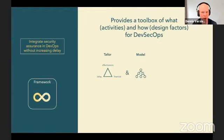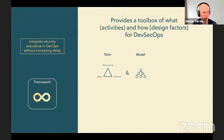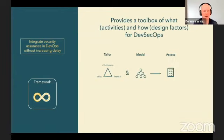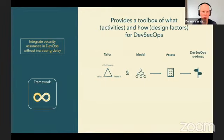So how can you use the outcome of the research? In the first stage, it gives you a toolbox of the 'what' — which is the activities — and the 'how' — which is the design factors — for DevSecOps. You could use it to tailor based on the characteristics of the target process, based on effectiveness, delay, and financial consequence. It reminds me of the old joke that you can have quality, on time, and on budget, but you can only choose two. Then you can use this to construct a model of the target DevSecOps process most suitable to your organization, perform an assessment against this target model to identify your current state, and potentially create a DevSecOps implementation roadmap.